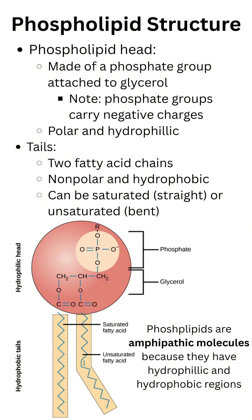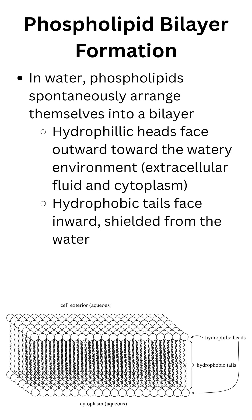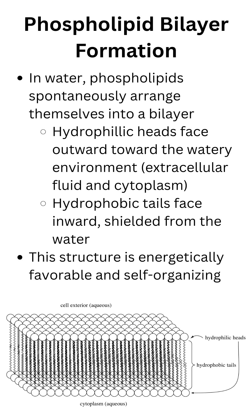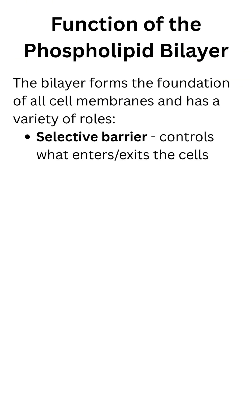Amphipathic is a term you want to remember because many membrane components share this characteristic. When we place these phospholipids in an aqueous environment, they're going to spontaneously arrange into a bilayer, with the tails facing inward to avoid water and the heads facing outward to interact with water. This arrangement is energetically favorable and forms a phospholipid bilayer, which is selectively permeable, meaning it controls what enters and exits the cell.